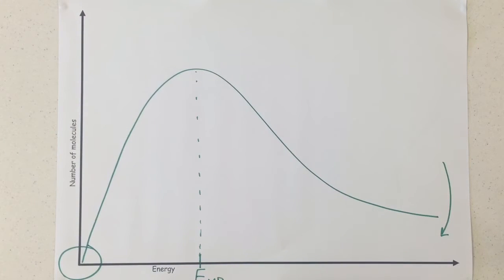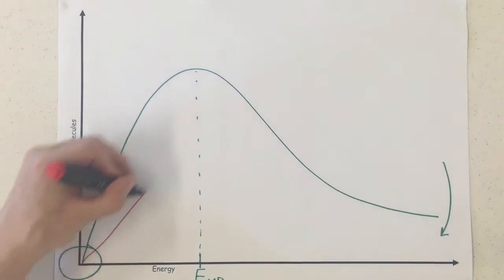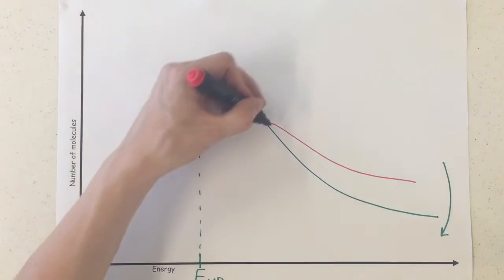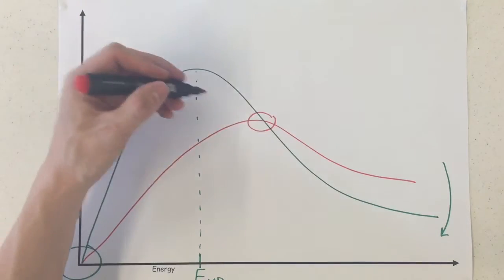So if you were to increase the energy by raising the temperature, you would see that the curve takes on a shape like this. Now we can see that the two curves have only crossed once.